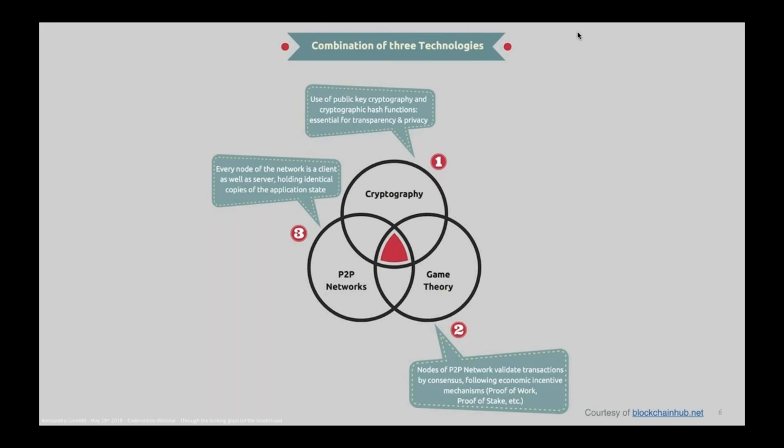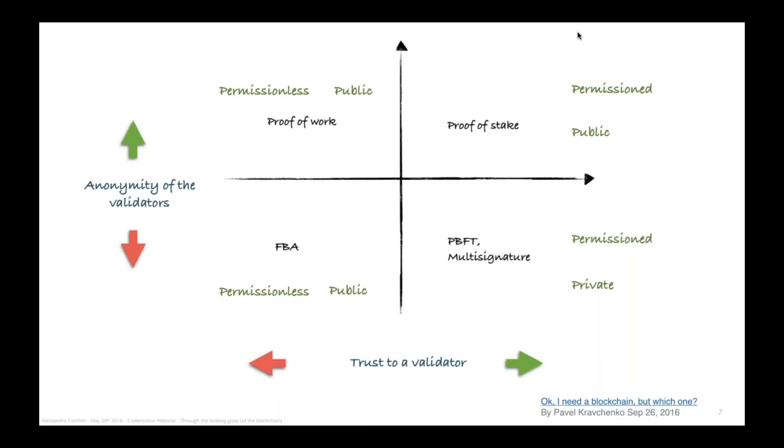When we talk about all those technologies, we talk about three main components: cryptography, game theory, and peer-to-peer networks. We use cryptography to sign all the information stored inside the blockchain. We use game theory to set up rules about how to build consensus about what will be the next block. And we use the peer-to-peer network to propagate all the information that each node preserves. Depending on how you mix those three components, you may have different flavors of blockchain.